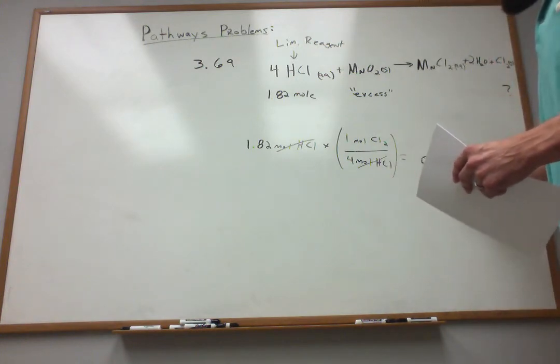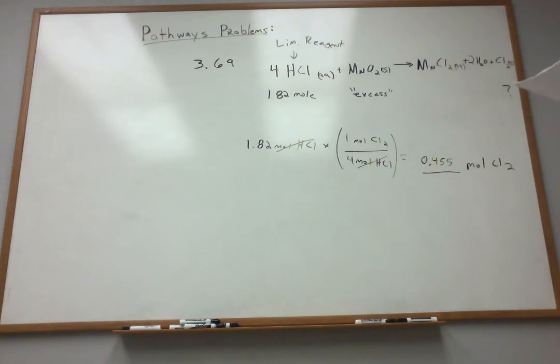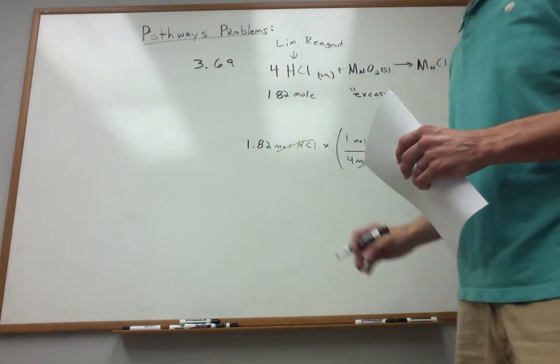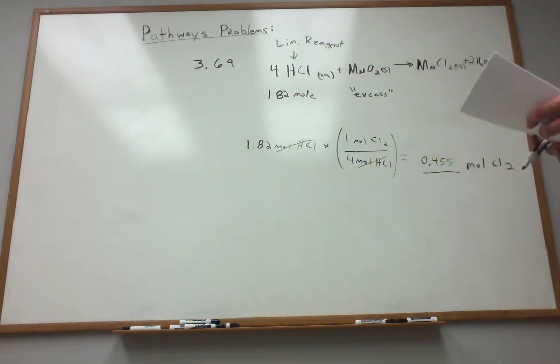And when I do that, I find that I can produce 0.455 moles of chlorine gas. That's all I can make. I cannot make any more because I will run out of this. I won't have any left. And if I don't have any of my HCl, my reaction is finished and over.